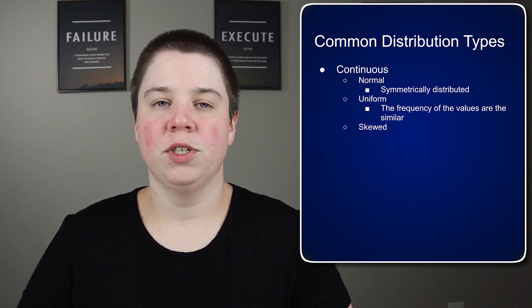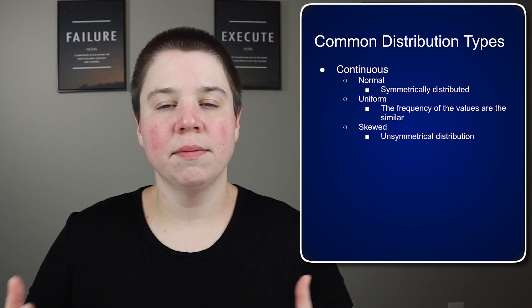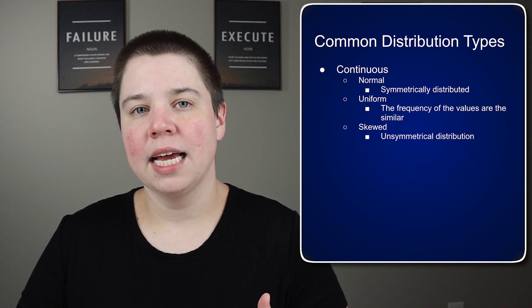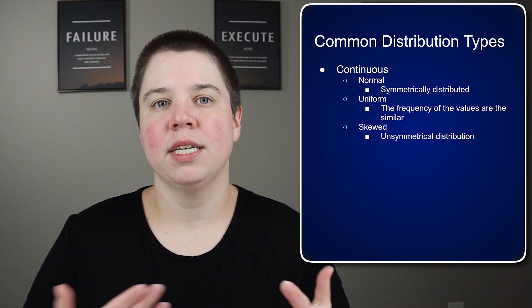You can also have a skewed distribution type. This means that they are not symmetrically distributed. Instead, one side is going to look different than the other side.